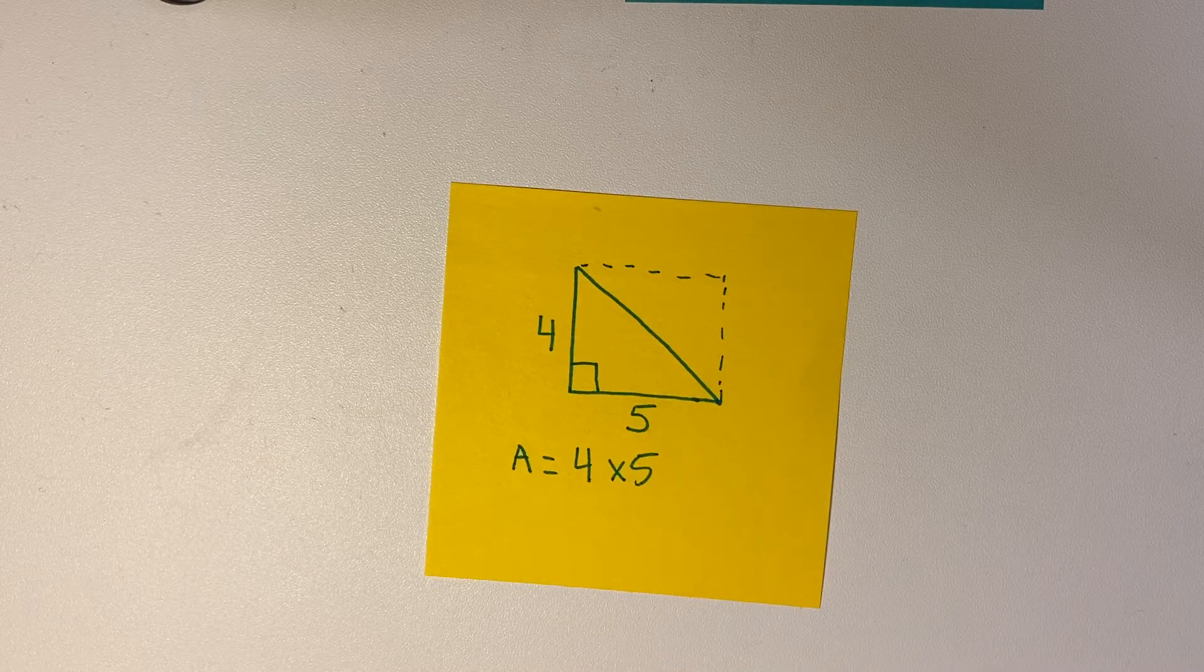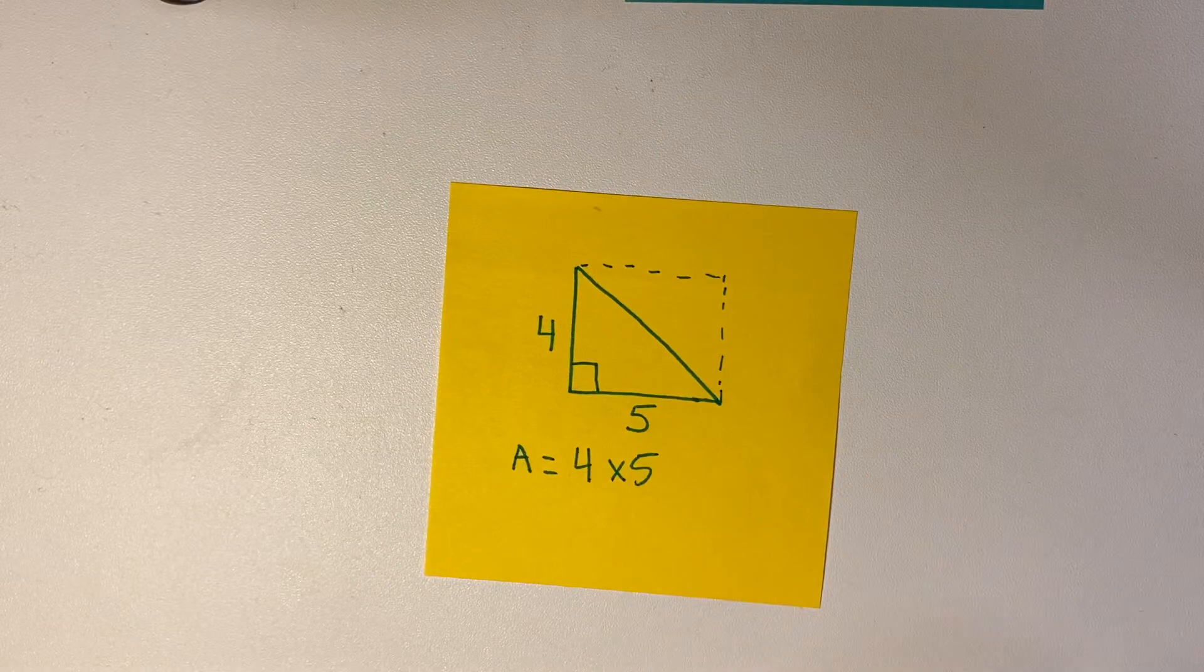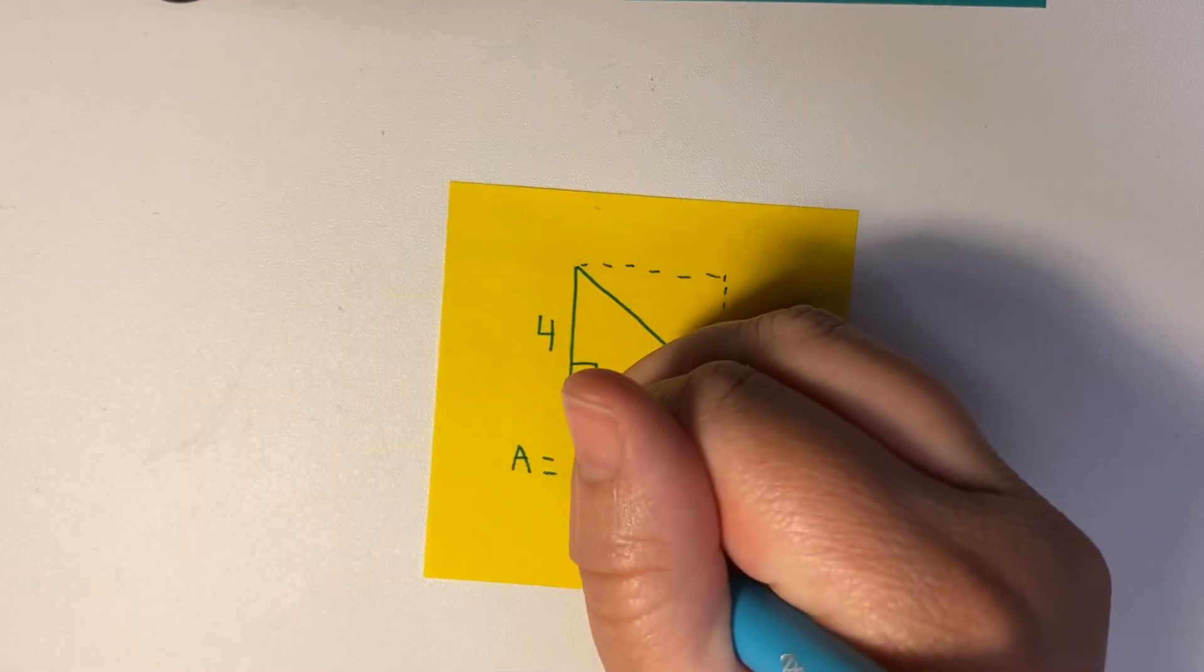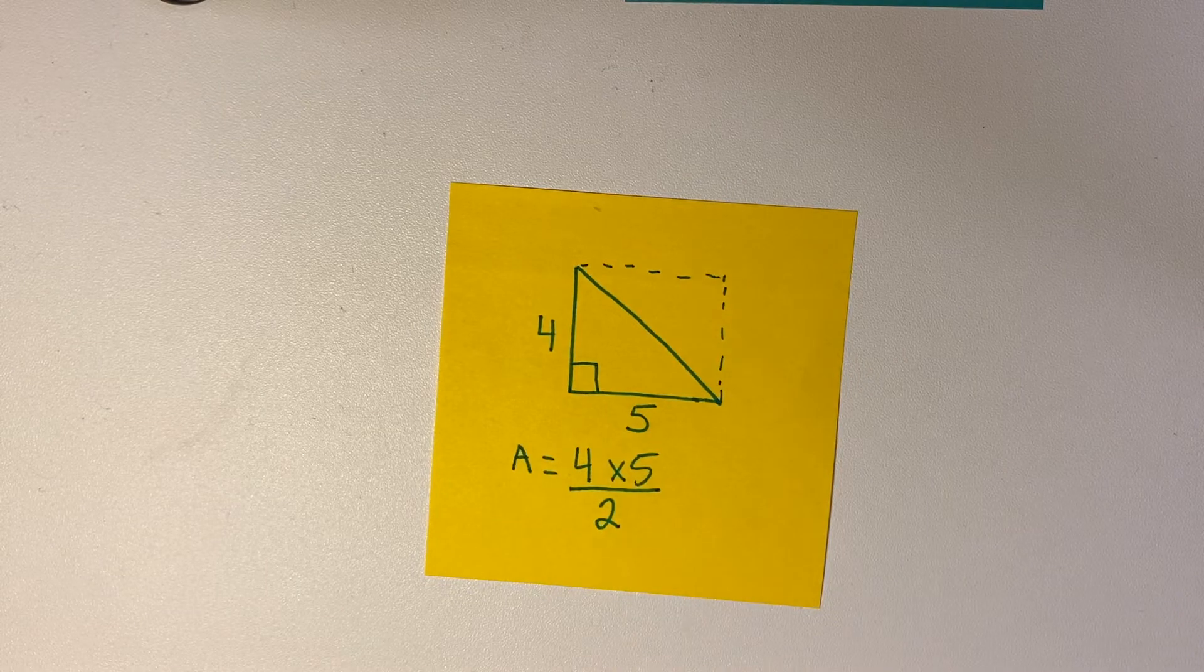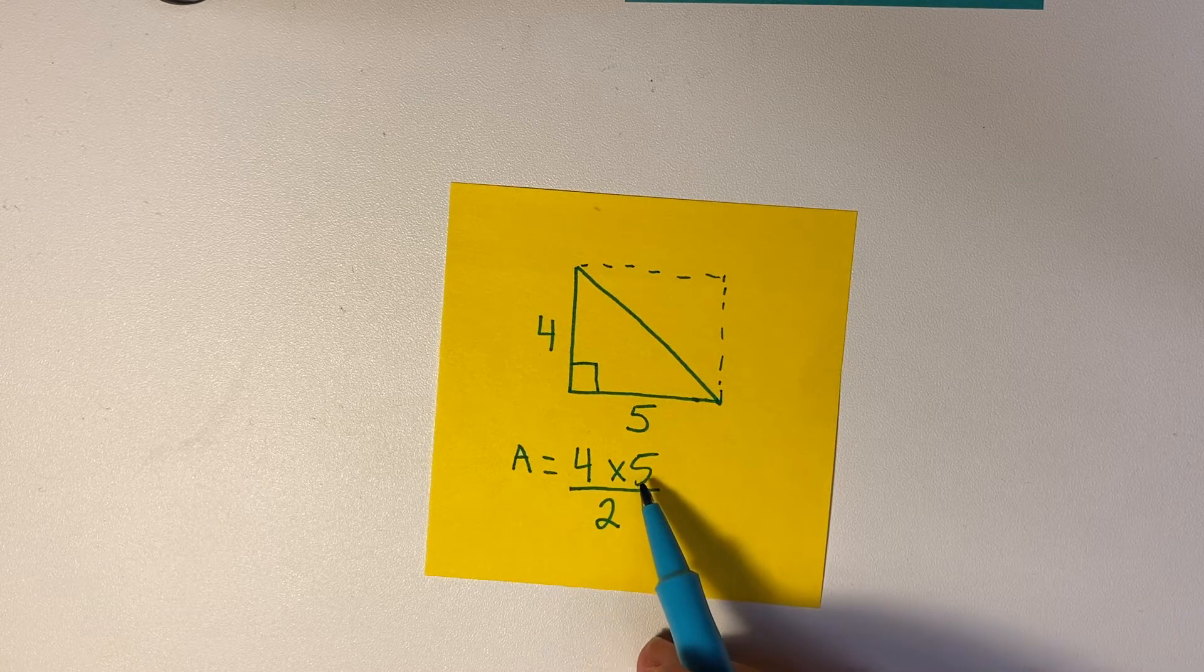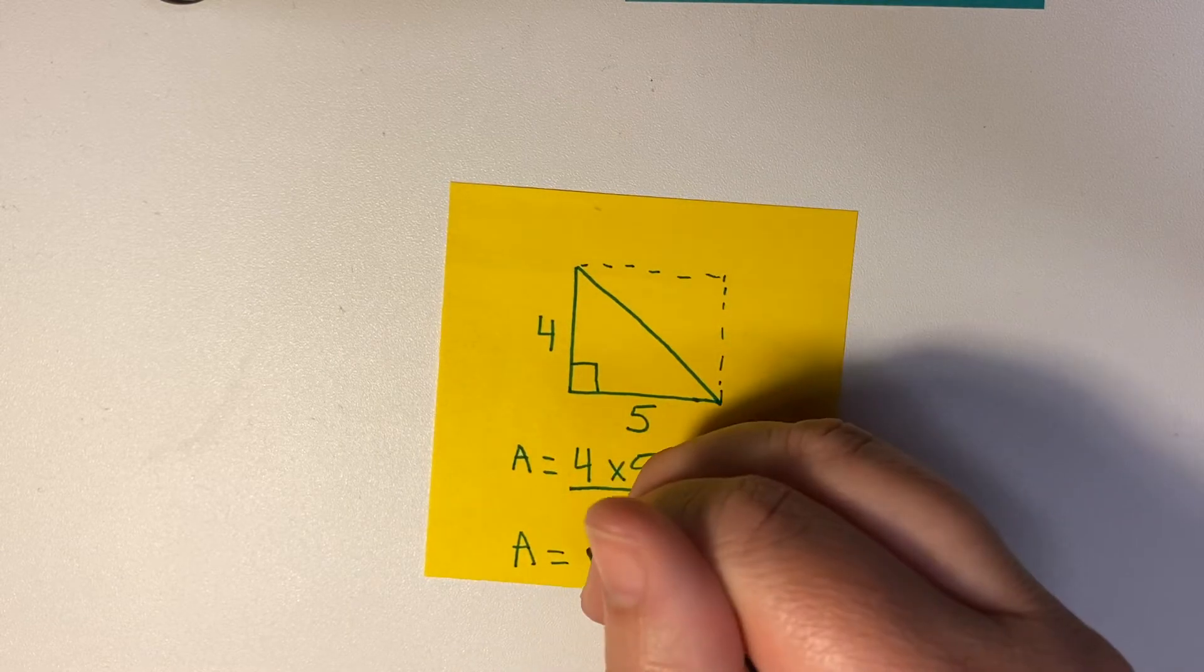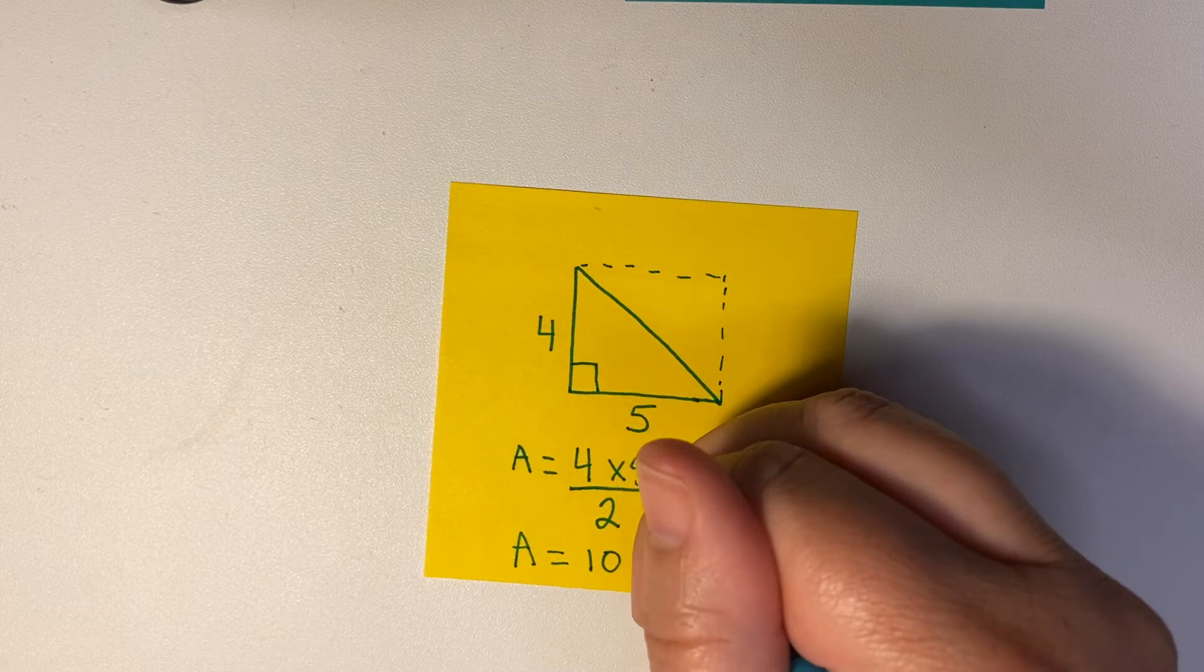And do you know how to find half of something? Well, if you want to find half of a pie, you would divide it in half, right? You cut it in half, you would make it into 2. So we're going to divide by 2. So 4 times 5 is 20, 20 divided by 2 is 10, so our area will equal 10.